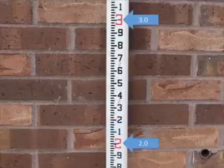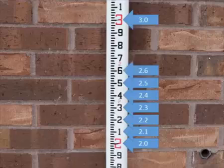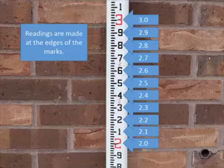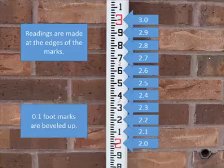The large red numbers on this level rod are one foot apart. Each one-tenth fraction of a foot is marked with a black number. Specifically the top edge of the long mark at the left edge of each black number marks the one-tenth increment. Look closely and you'll see that each tenth mark has its right end beveled up. That is the point of the bevel is on the edge corresponding to the tenth of a foot.